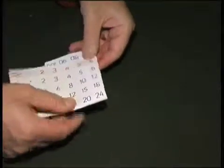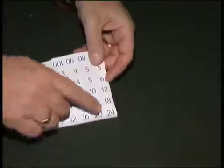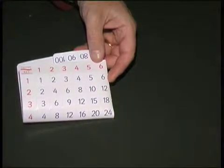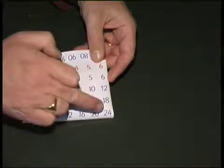4 times 6 is 24 and the answer is always found in the bottom right-hand tile. Whatever permutation you choose to multiply, the answer is always here.